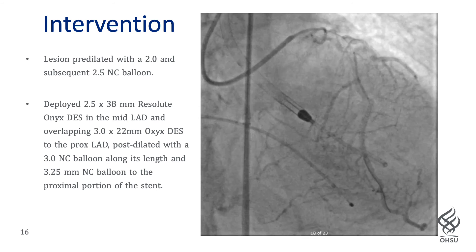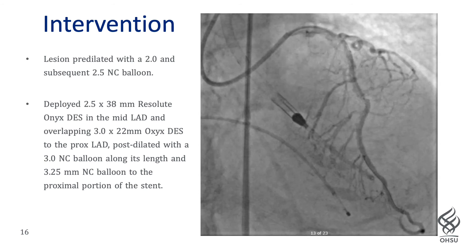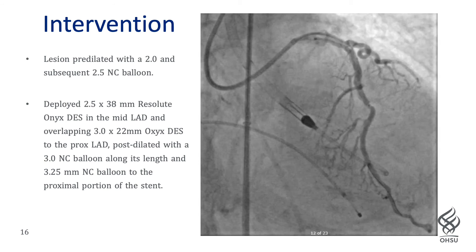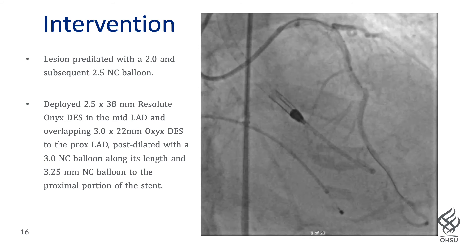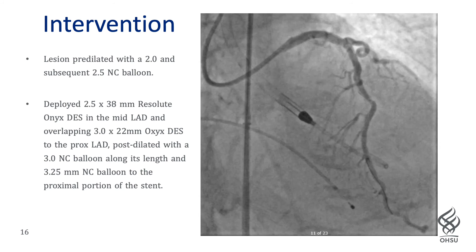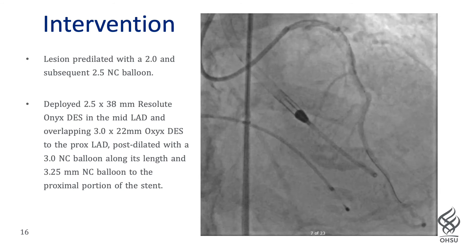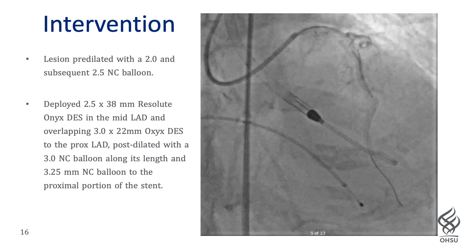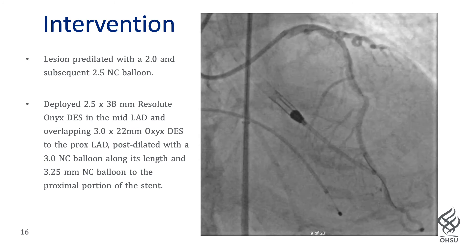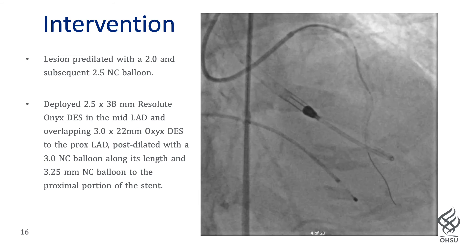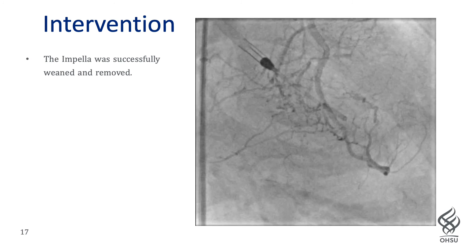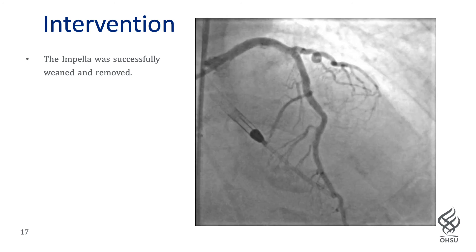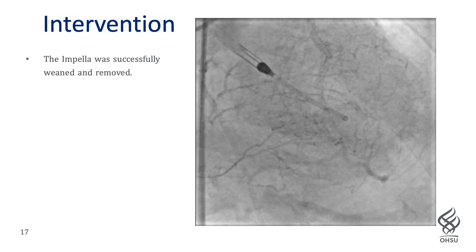The lesion was pre-dilated with a 2.0 and 2.5 NC balloon. Using angiographic sizing and considering the patient's small BMI of 19 and weight of 63 kilos, a 2.5 by 38 Resolute Onyx DES was placed in the mid-LAD, and a subsequent overlapping 3.0 by 22 Onyx DES was placed in the proximal LAD, post-dilated with a 3.0 NC balloon along its length and a 3.25 balloon more proximally. Completion angiography showed full stent expansion, conversion of the 70 to 80 percent stenosis to 0 percent with TIMI-3 flow, and no evidence of complication.